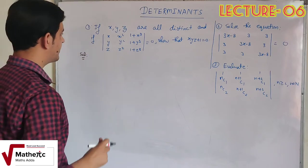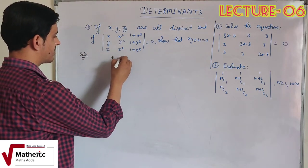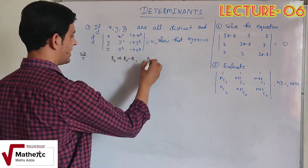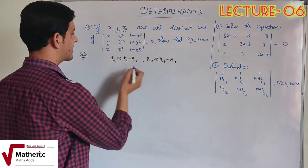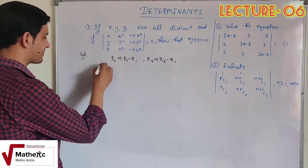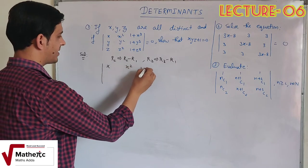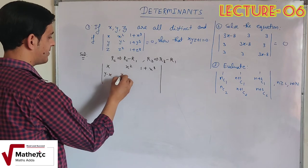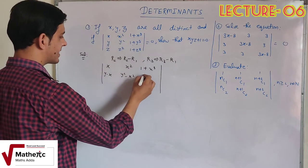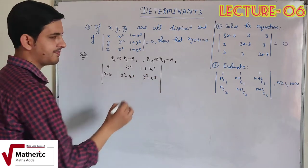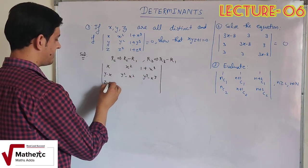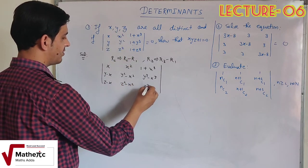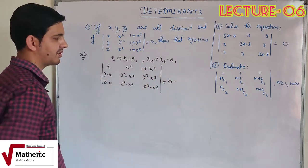First operation: R2 = R2 − R1, second row R3 = R3 − R1. First row remains x, x², x³. After subtraction we get: R2 becomes (y−x), (y²−x²), (y³−x³) and R3 becomes (z−x), (z²−x²), (z³−x³). The determinant equals zero.